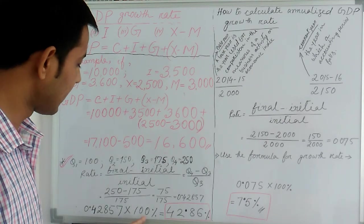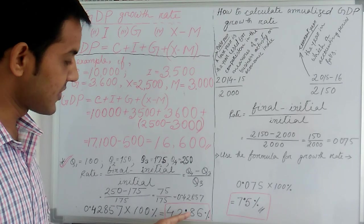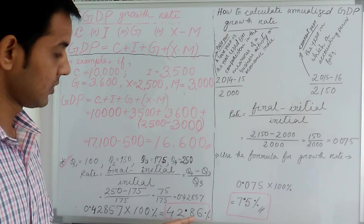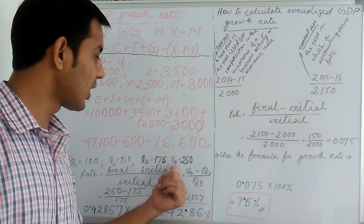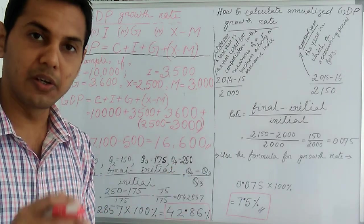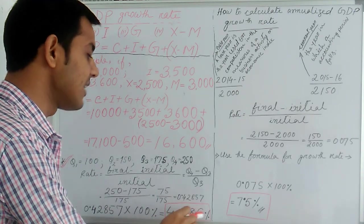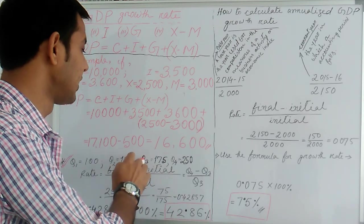And multiplied by 100%, we got 42.86%. So you can say that in quarter 4, GDP growth rate is increased by 42.86% as compared to the quarter of Q3.